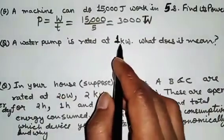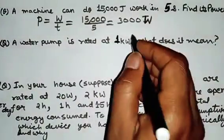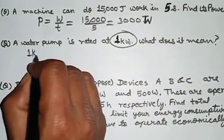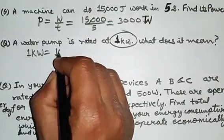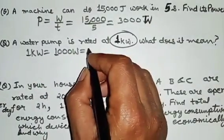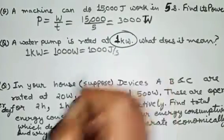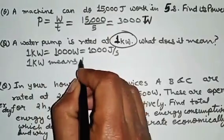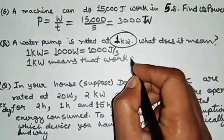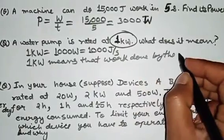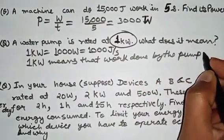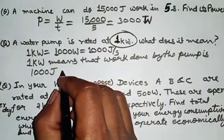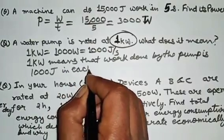Now, a water pump is rated at 1 kilowatt — what does it mean? One kilowatt equals 1,000 Watt, and one Watt equals one Joule per second, so 1,000 Watt equals 1,000 Joules per second. Therefore, one kilowatt means the pump does 1,000 Joules of work each second.